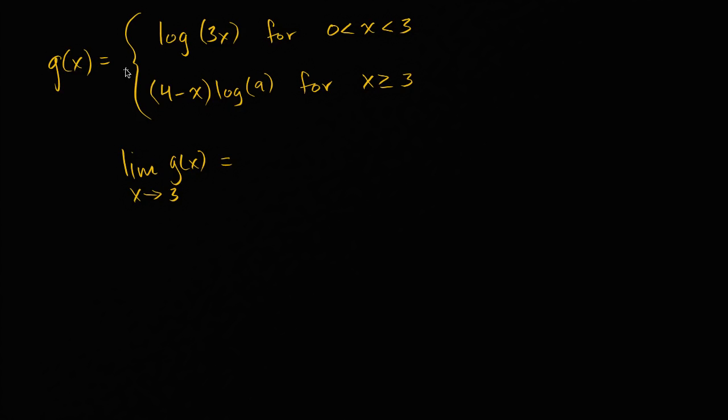So we have g of x being defined as the log of 3x when zero is less than x is less than three, and four minus x times the log of nine when x is greater than or equal to three.